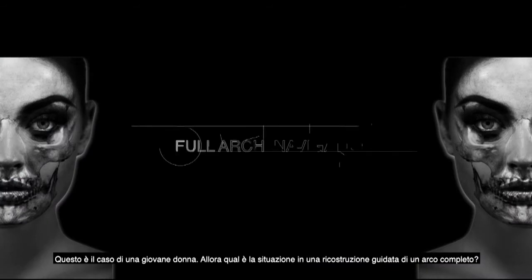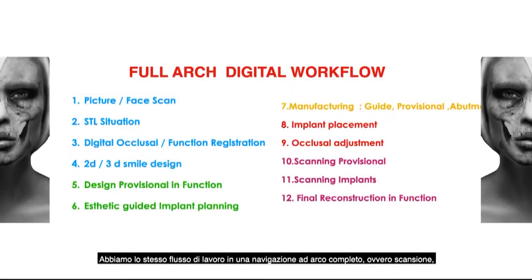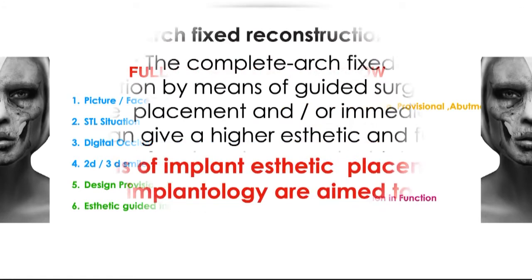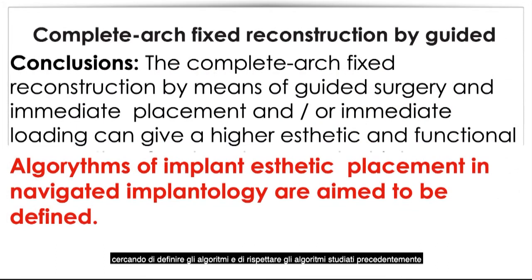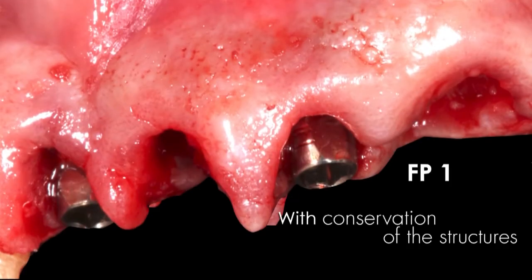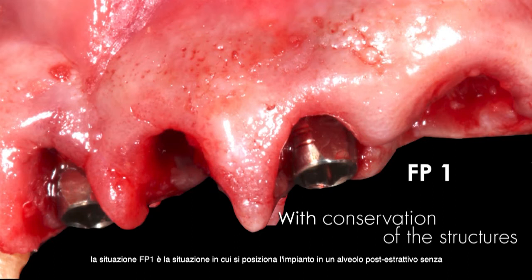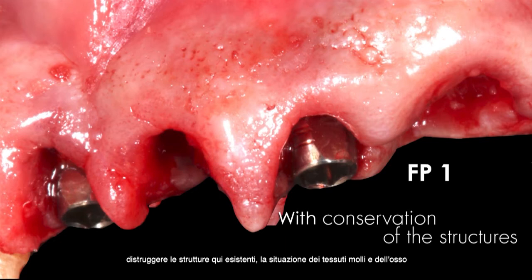In the full arch navigation situation, we have the same workflow: scan, plan, make, done — with immediate placement and immediate loading. We try to define the algorithm and respect what we preliminarily know in all cases and evaluate results — this is an ongoing study. The FP1 situation is where you place the implant in an extraction socket without destroying existing structures; soft tissue and bone are sufficient for restoration.